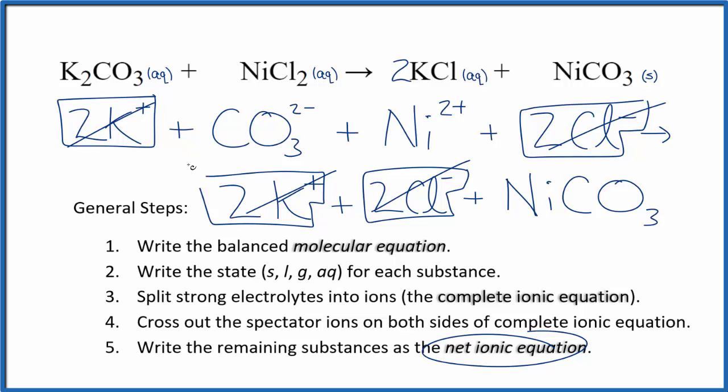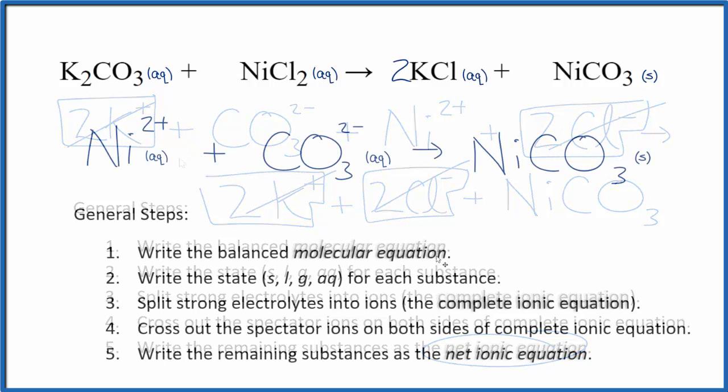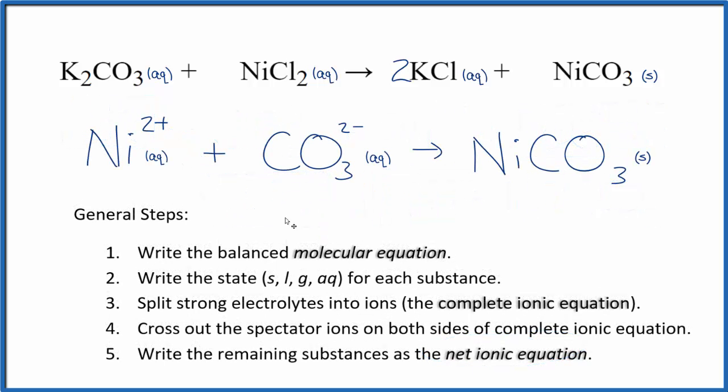I'll clean this up and write the states. We'll have our net ionic equation. So this is the balanced net ionic equation for potassium carbonate and nickel-2 chloride. You'll note charge is balanced. We have two plus and two minus. That gives us a net charge of zero. Over here, the nickel-2 carbonate, that's a neutral compound, net charge of zero. If you count the atoms up, they're balanced as well.